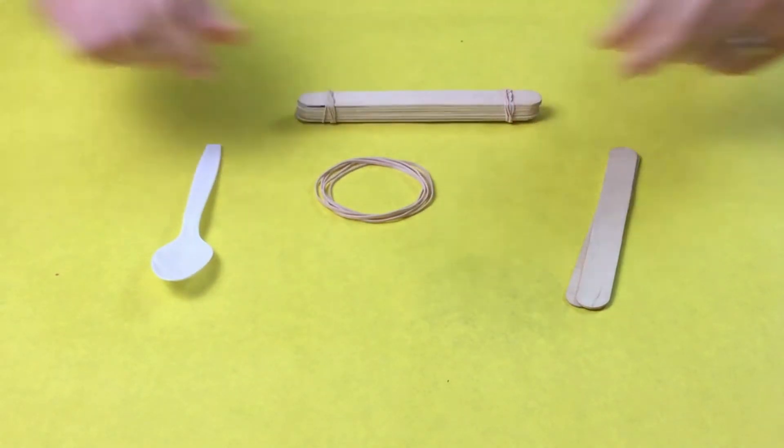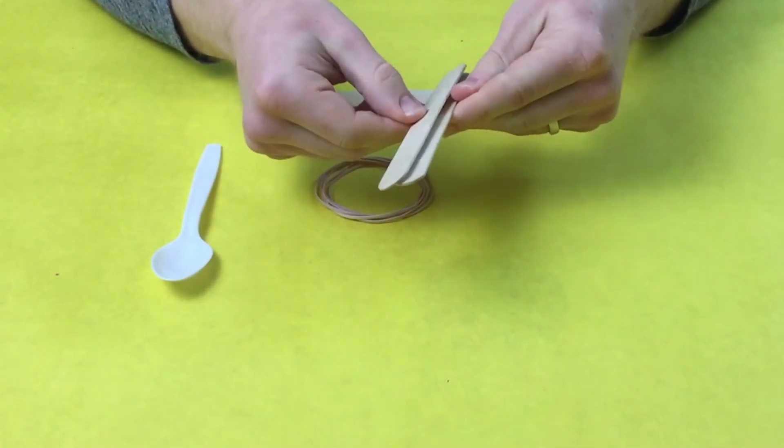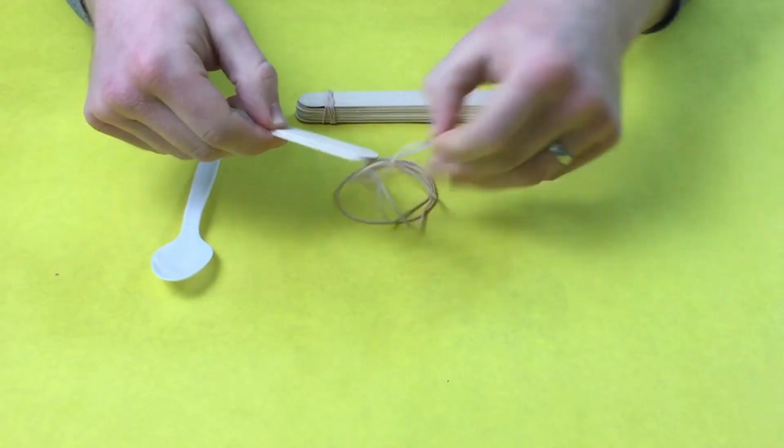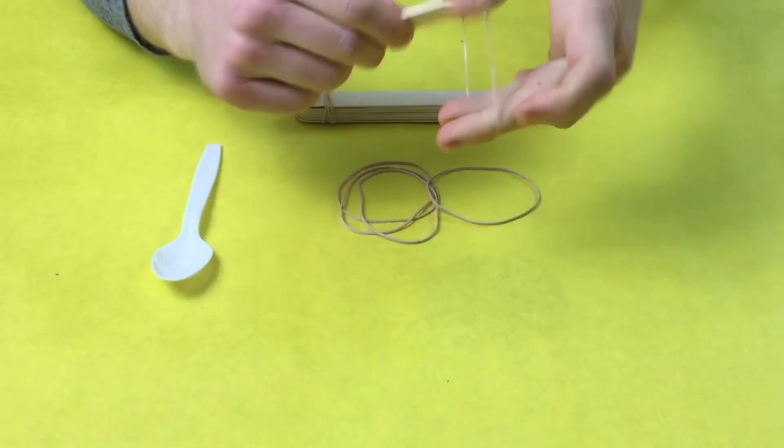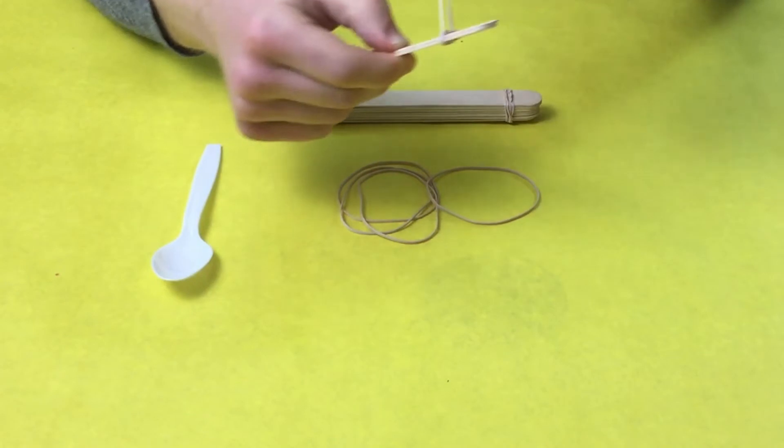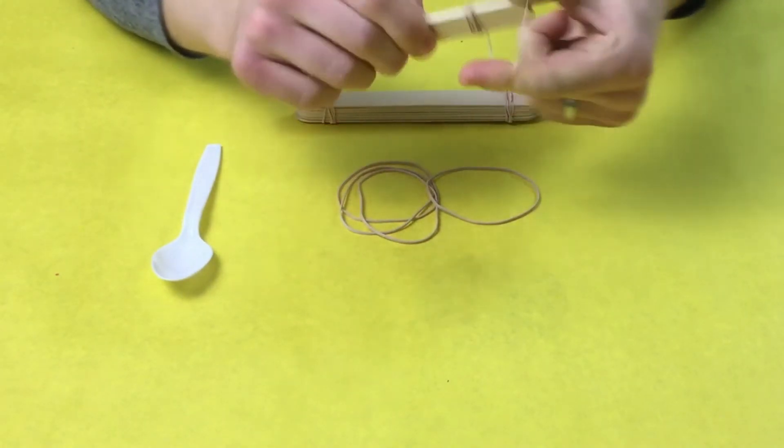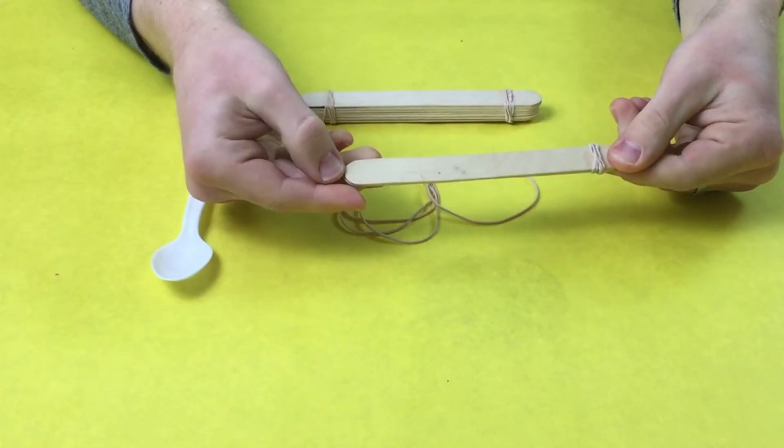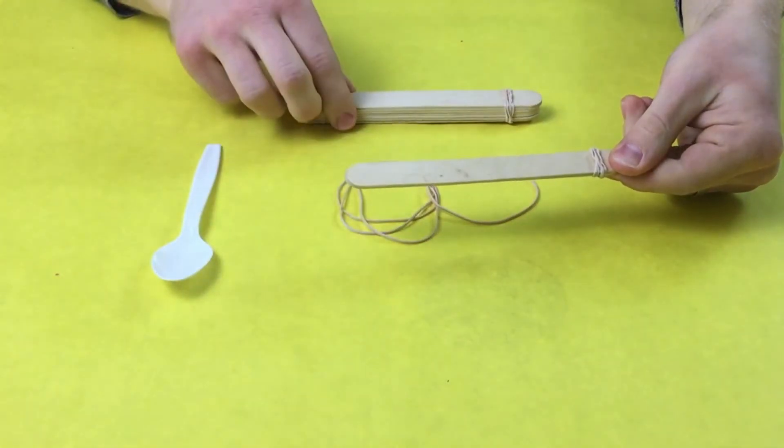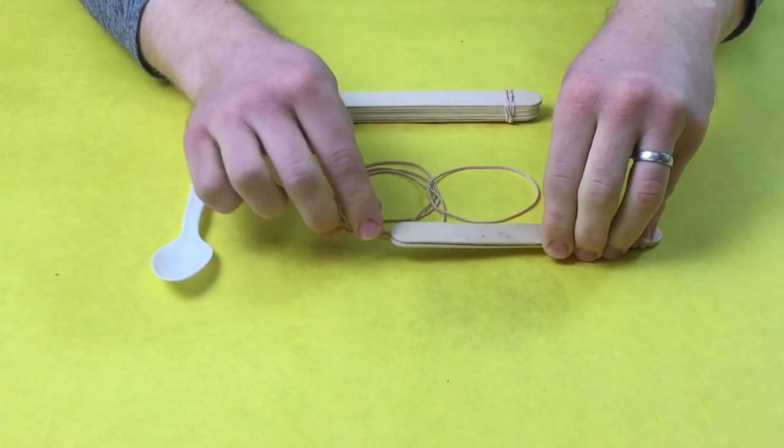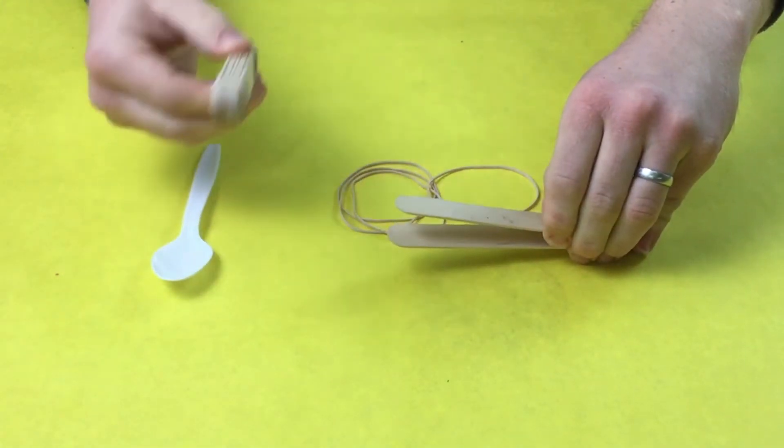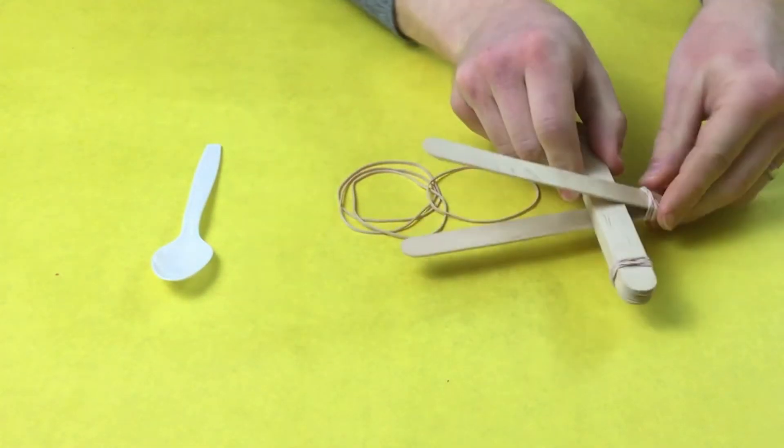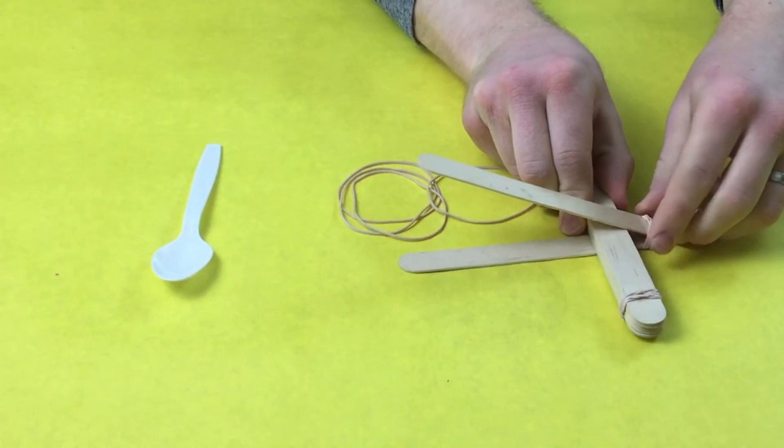Then we're going to take the other two craft sticks and rubber band those together at one end. Slide that down so that it's at the end like this. Next we're going to open up these two and slide our stack in between. You should end up with something like that.